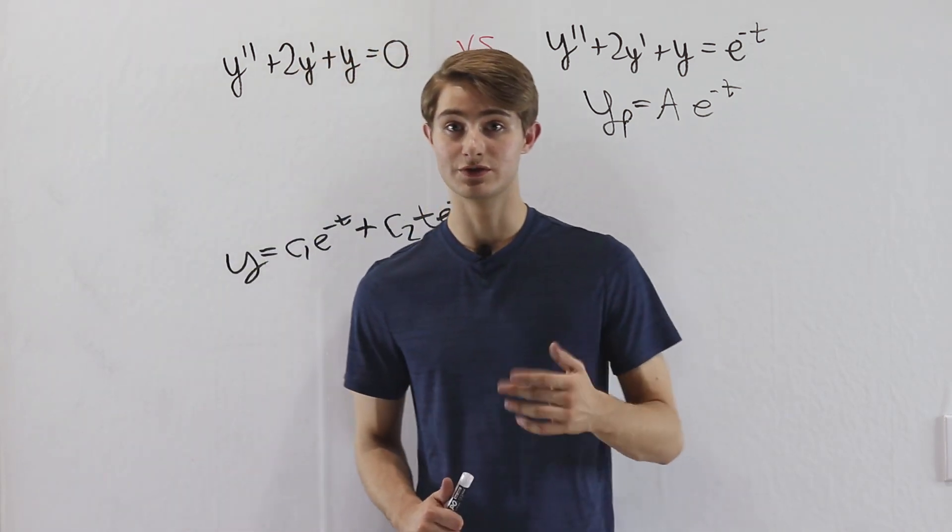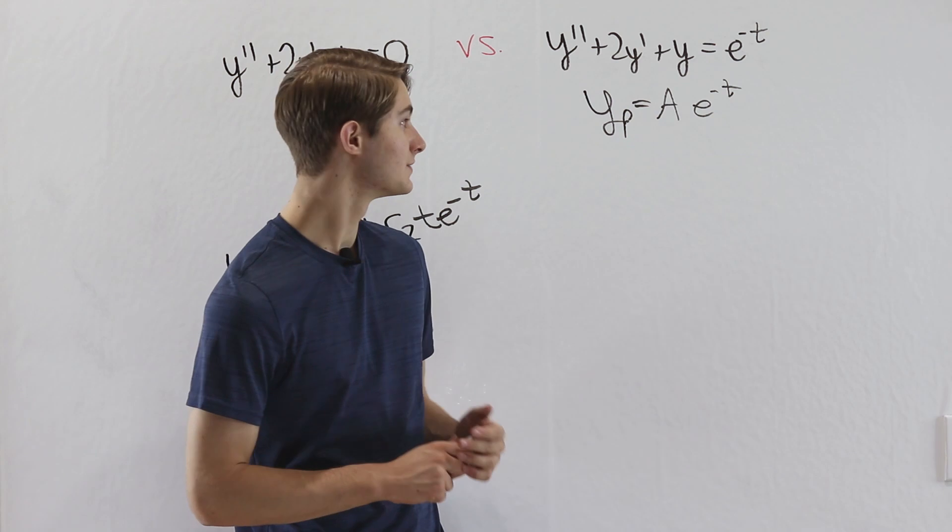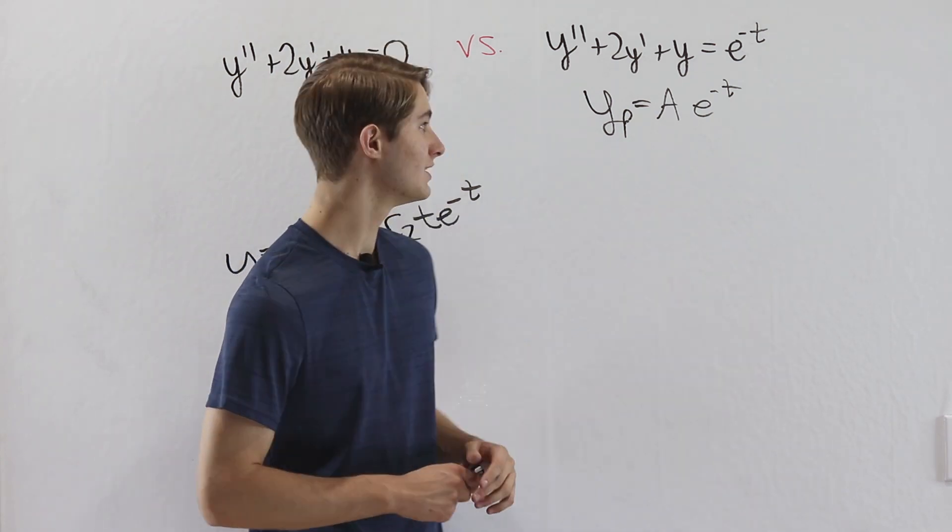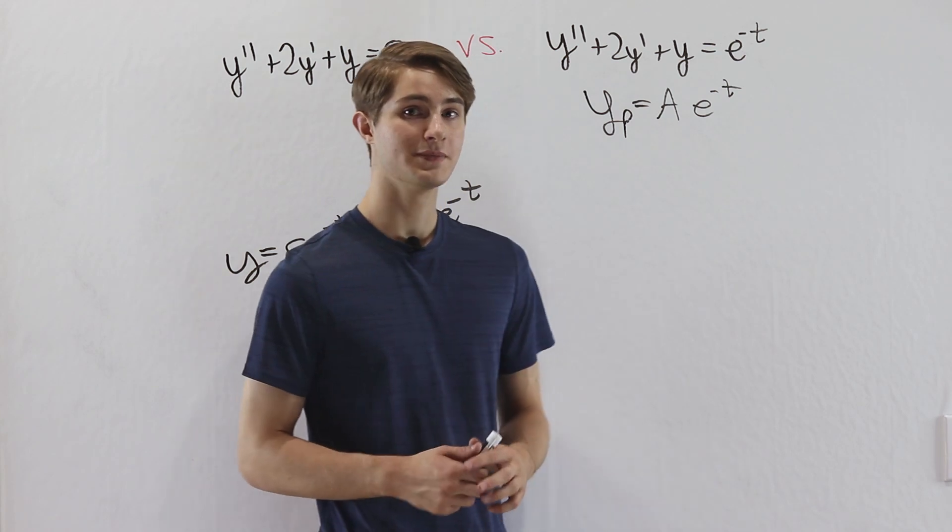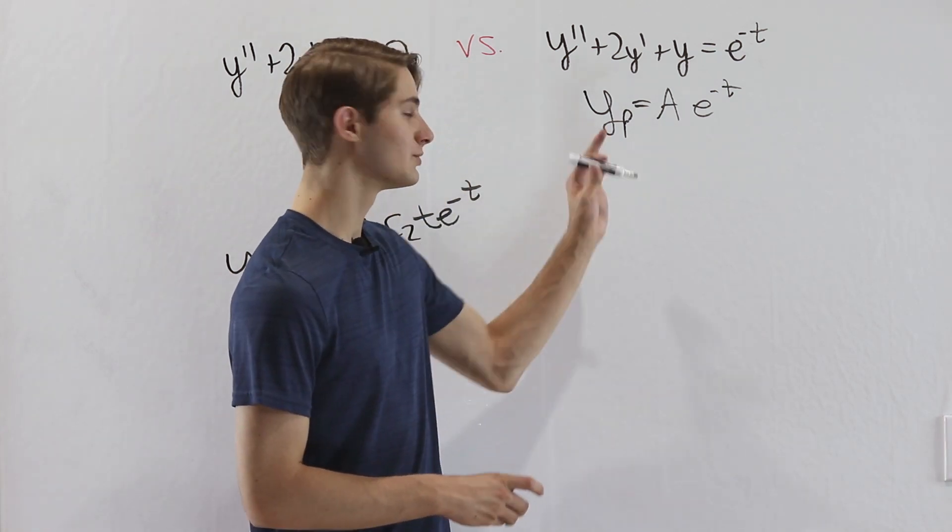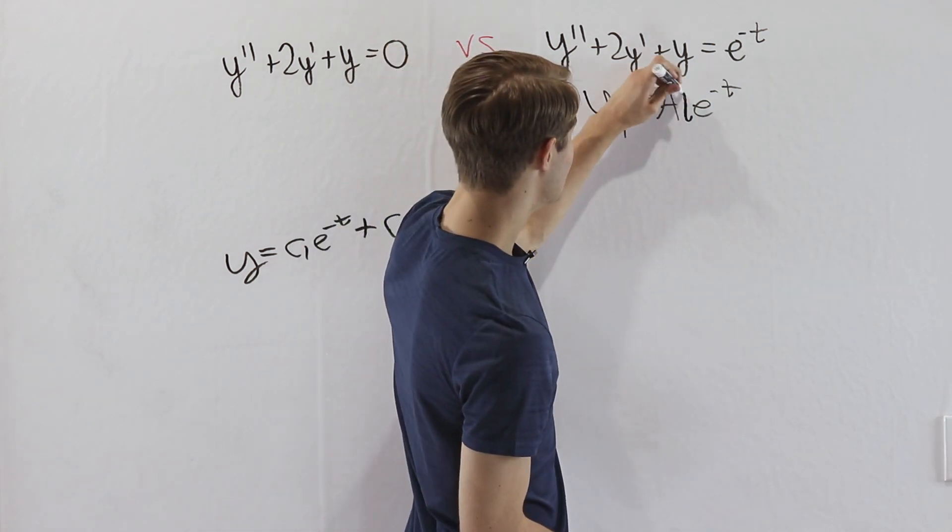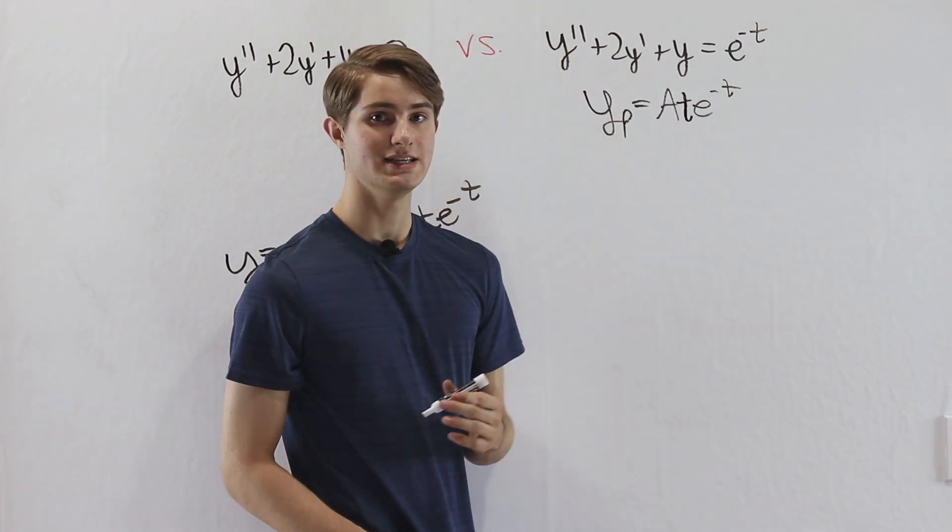Well here is a very good trick when it comes to undetermined coefficients. If you have some guess that you think should work for the solution and for some reason it's not working, your best bet is to try multiplying it by t. So instead of guessing a e to the negative t, we're going to guess a t e to the negative t.